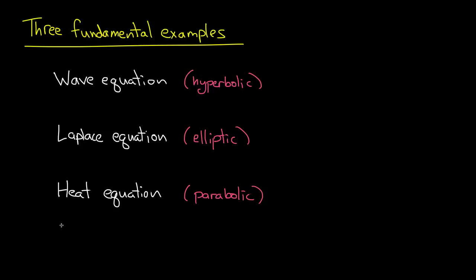The reason for choosing these three examples is, first of all, each one describes a very different kind of physical phenomenon. The second reason is that each one is a prototypical example for a very large class of equations, and I've written the names of these classes of equations right here in parentheses. The wave equation is prototypical for hyperbolic equations, the Laplace equation is prototypical for elliptic equations, and the heat equation for parabolic equations.